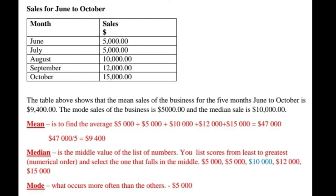Now let's look at how we could calculate the median. The median is the middle value of the list of numbers we are looking at. However, to get the median, it's recommended that the numbers be listed from least to greatest in numerical order. So in this case, as you see in the example, we have $5,000 and another $5,000, then $10,000, $12,000, $15,000 — going from the least $5,000 up to $15,000. We then find the middle value, which is $10,000. So the median is $10,000.